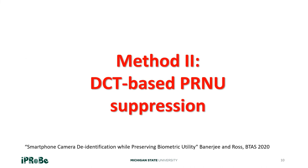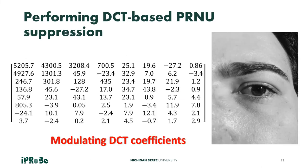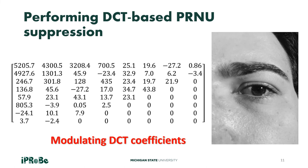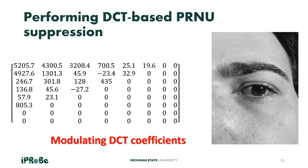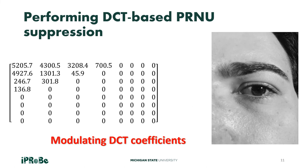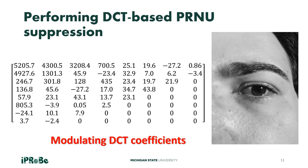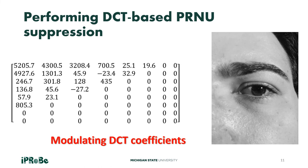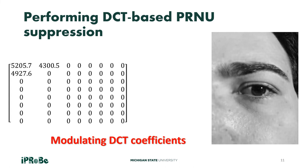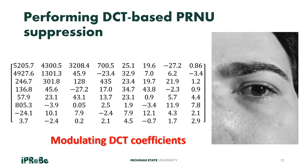The second method is known as DCT-based PRNU suppression. In this method, we strategically modulate the DCT coefficients in order to suppress high-frequency information. Why do we do so? Because PRNU typically resides in the high frequencies.